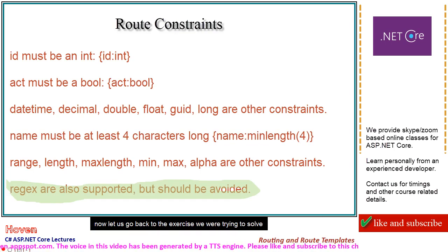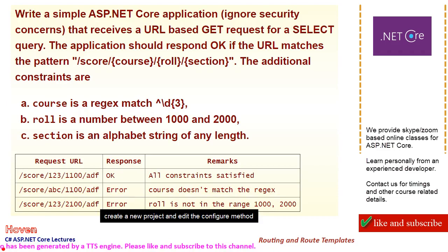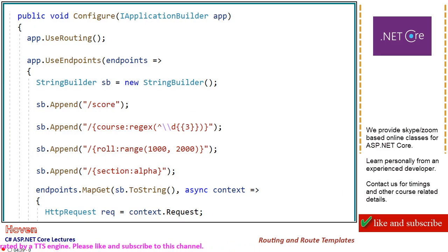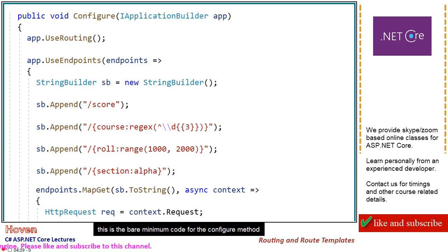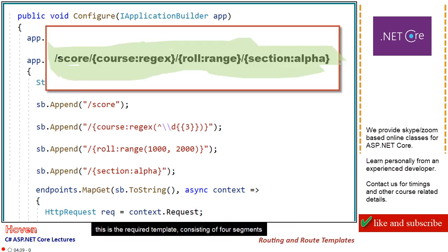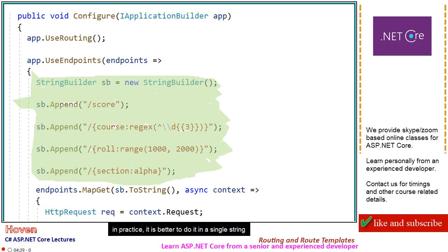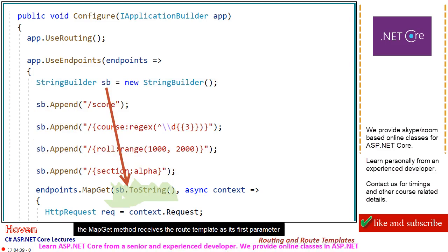Now let us go back to the exercise we were trying to solve. Create a new project and edit the Configure method. This is the bare minimum code for the Configure method. We have to specify the route template for Course, Role, and Section parameters. This is the required template consisting of four segments. We have used a string builder to build it, which has been done for clarity of explanation. In practice, it is better to do it in a single string. The MapGet method receives the route template as its first parameter.